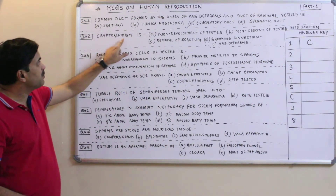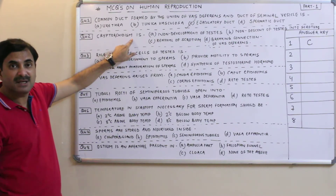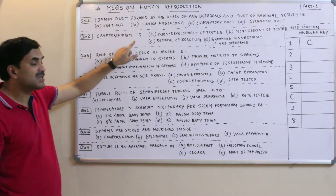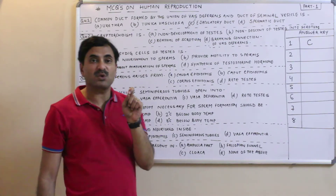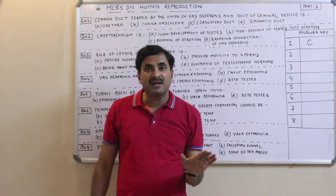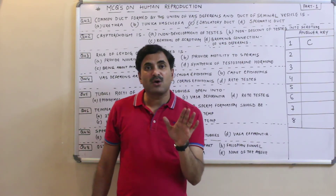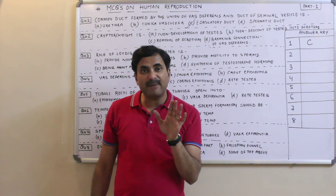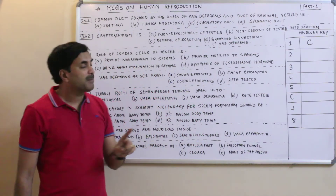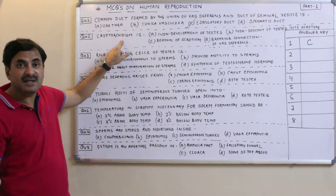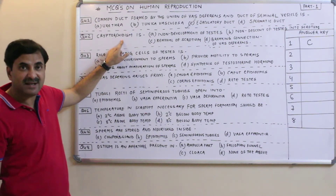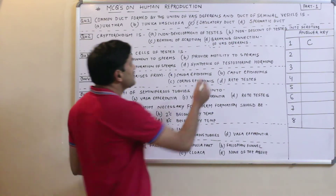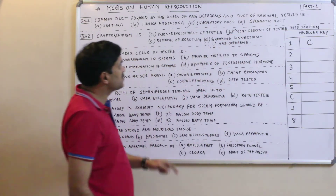Question two: What is cryptorchidism? It is a disorder found in some male children in which the testes are unable to descend down into the scrotum sac. Normally, during the seventh month of embryonic development, the testes descend from the abdomen into the scrotum sac, but in some children this does not occur. This condition is called cryptorchidism — meaning non-descension of testes into the scrotum.